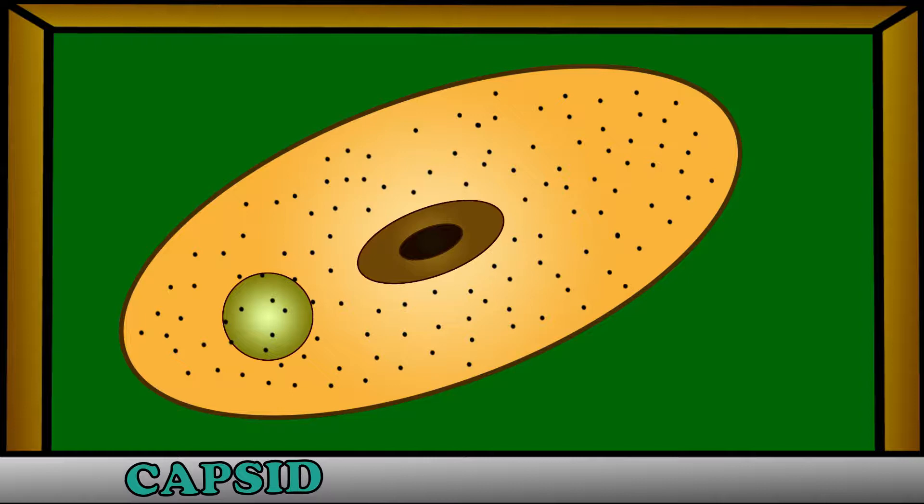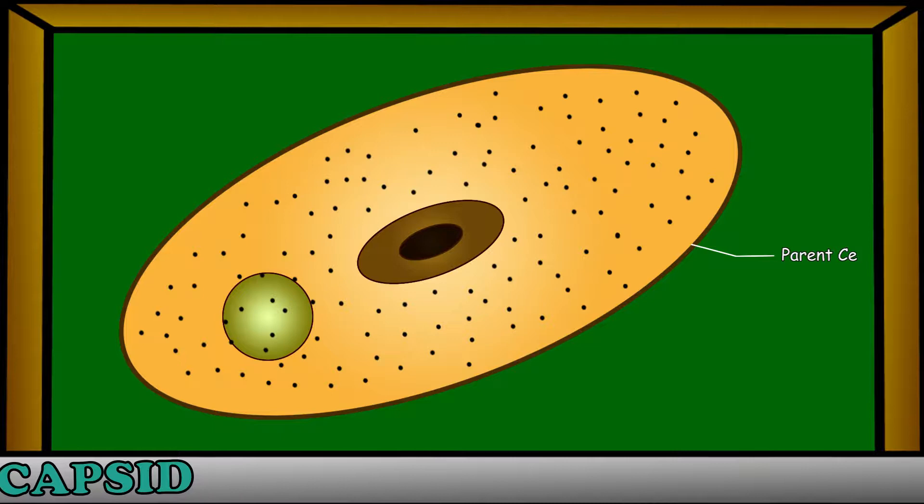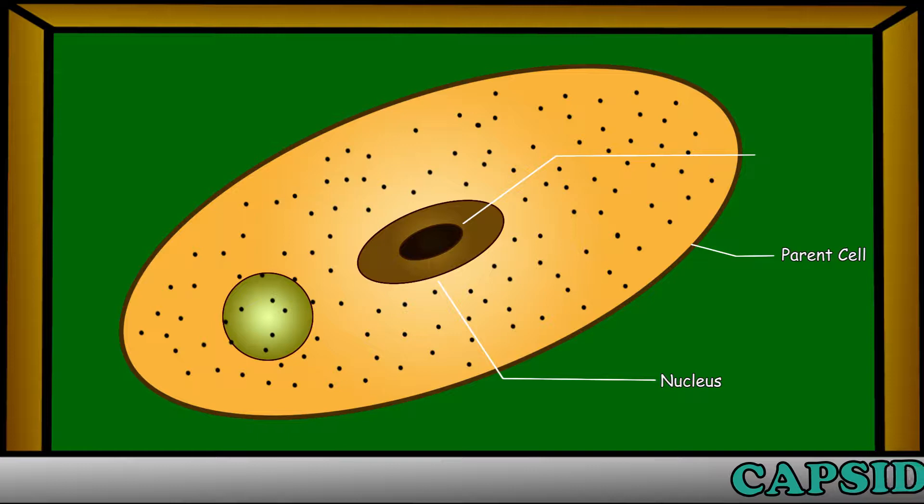Yeast generally consists of a cell wall, nucleus, nucleolus, and contractile vacuoles.